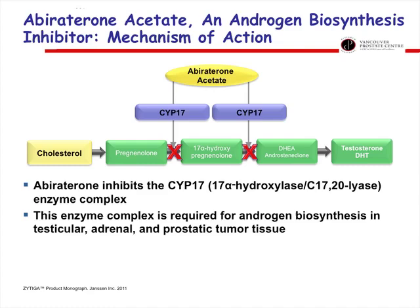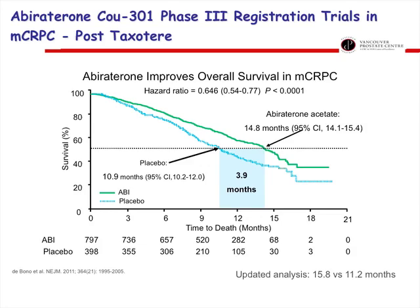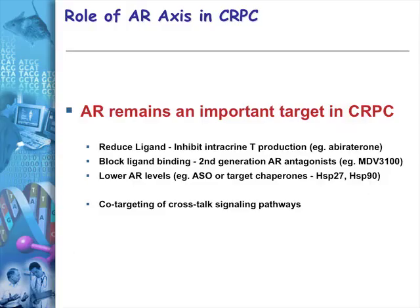Abiraterone inhibits androgen biosynthesis not just in the testicle and adrenal gland but also in the prostate cancer cells themselves. Published in the New England Journal, it shows a robust four-month gain in overall survival — almost twice that of docetaxel — as a once-daily pill that is very well tolerated, with only fluid retention and hypokalemia to watch for. This is moving forward upstream of castrate resistance and something we have to be aware of.